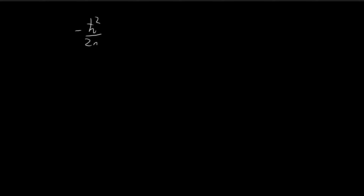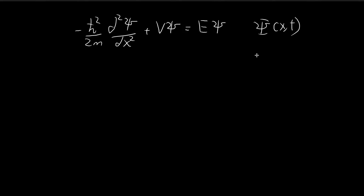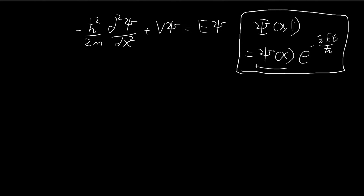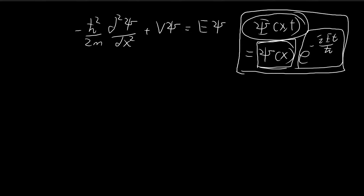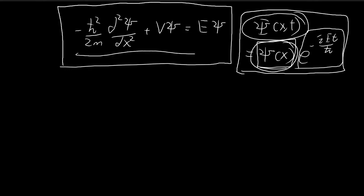In order to uncover the properties of the infinite square well, we need to solve the time-independent Schrödinger differential equation. Recall that the wave function is given by the separable solution ξ(x) times e to the power of negative iEt divided by h-bar. So to find the wave function, all we have to do is find ξ(x), which satisfies the differential equation. That's what we're going to focus on.